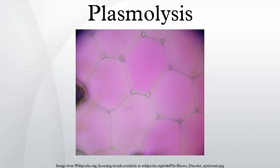Plant cell walls resist further water entry after a certain point, known as full turgor pressure, which stops plant cells from bursting as animal cells do in the same conditions. This is also the reason that plants stand upright. Without the stiffness of the plant cells, the plant would fall under its own weight.